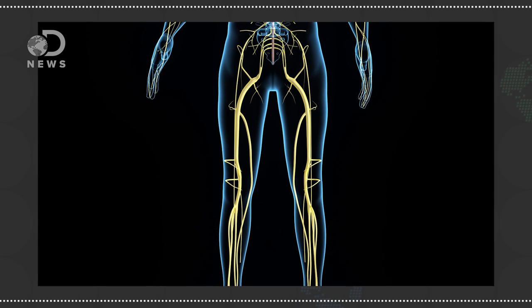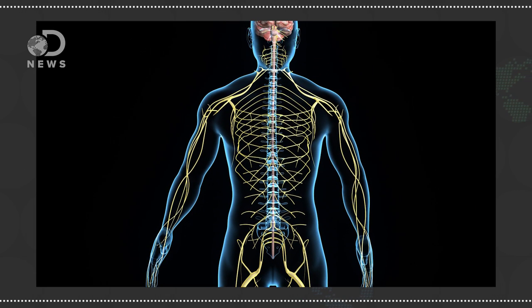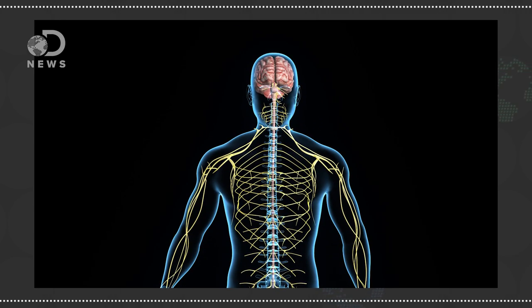As ALS progresses, it will start somewhere, and then spread to surrounding motor neurons, affecting muscles all over the body. This can take away the ability to walk, write, speak, swallow, and breathe. Once the muscles don't get commands, they begin to atrophy or shrink.